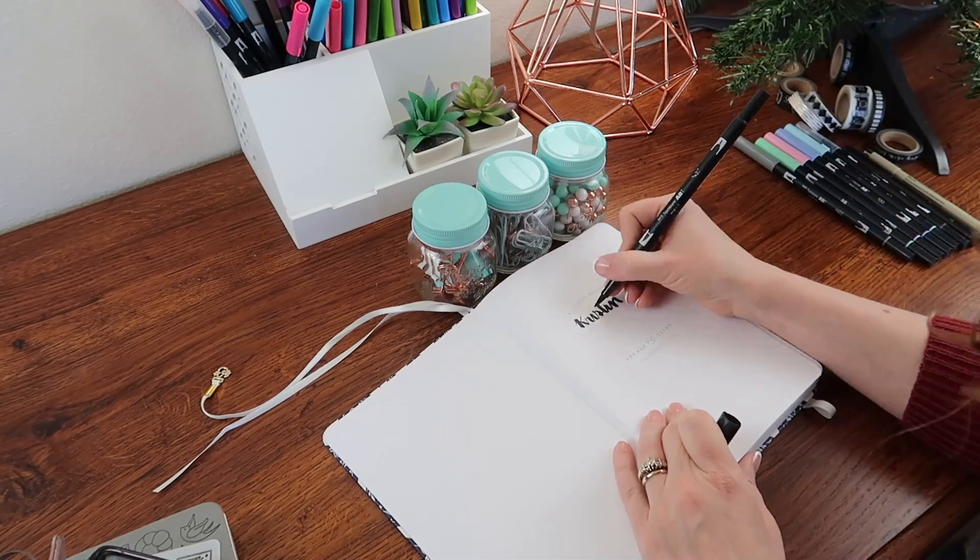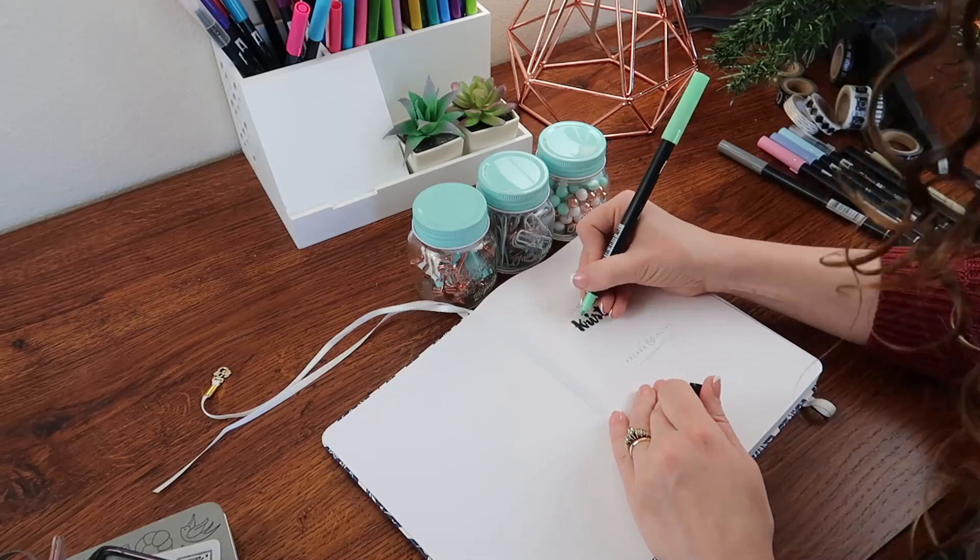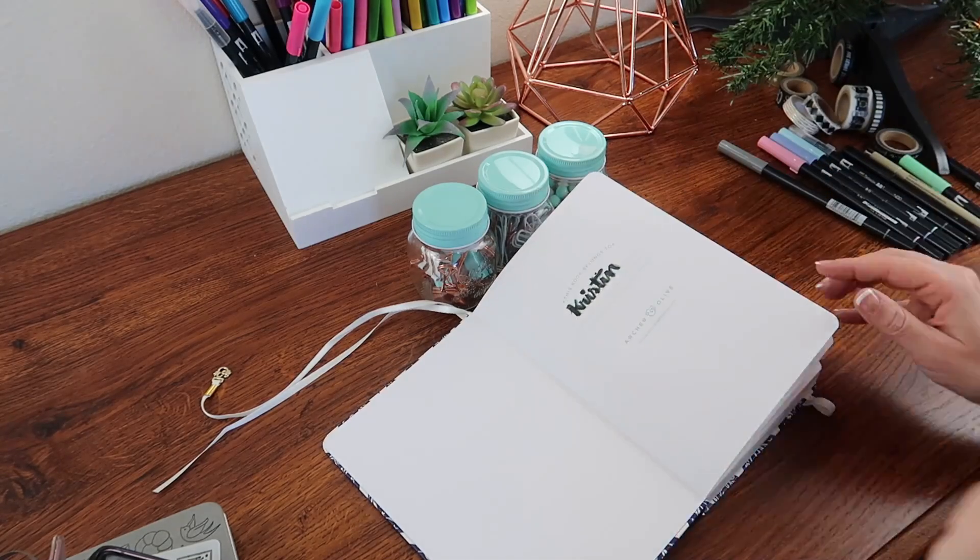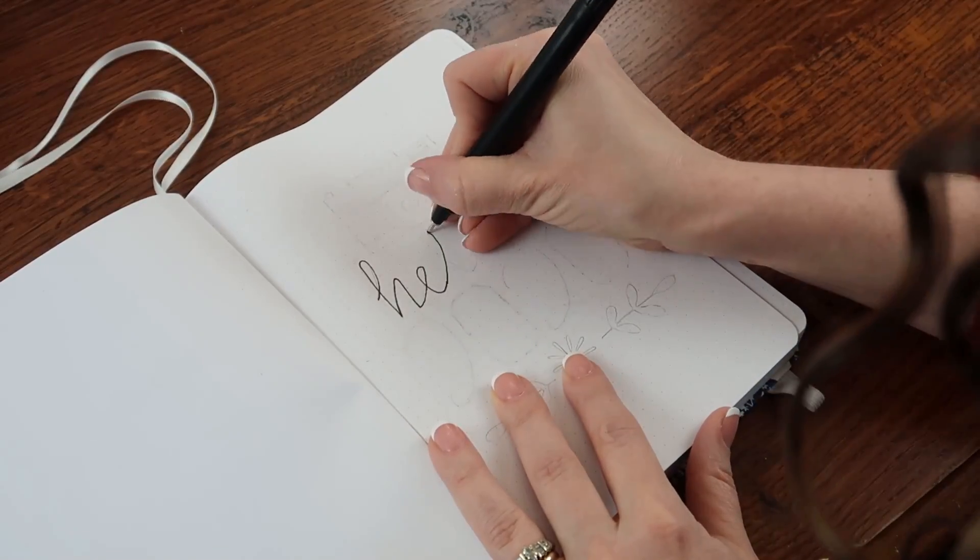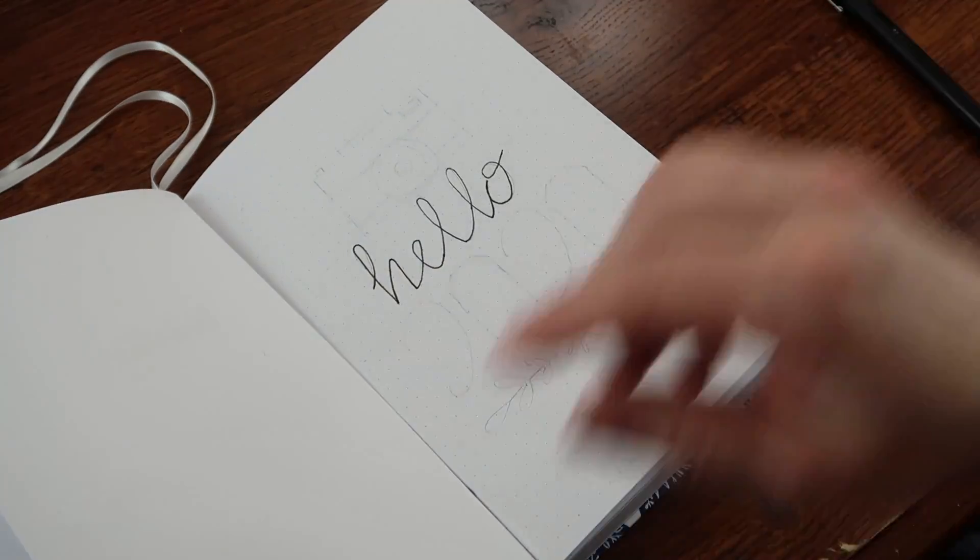It is the dot grid notebook and it has 160 gsm so it's ultra thick paper. So I hear that you can even watercolor in these and I'm pretty excited about that because I haven't watercolored for a very long time and I would really like to try it out in my bullet journal this year.